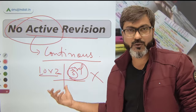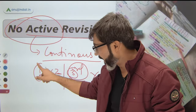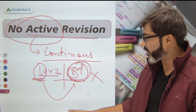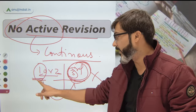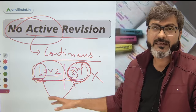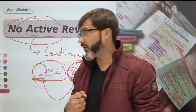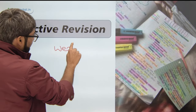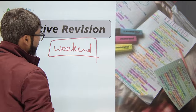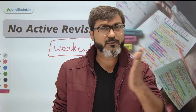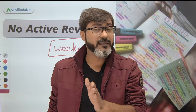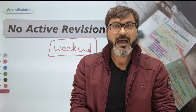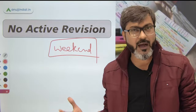Whatever you read on the very first day of the first month, you will not be able to recall it when you start revision in the third month — it will feel absolutely new. That's why you need continuous or active revision. How you can do it: every weekend, devote that day to revise whatever you have read in the previous week. From Monday to Saturday, whatever you have studied, you revise it on Sunday.